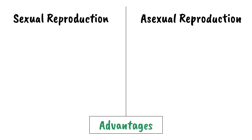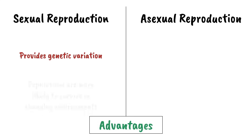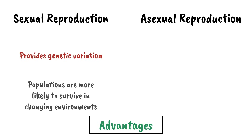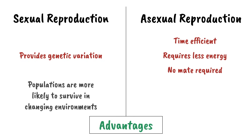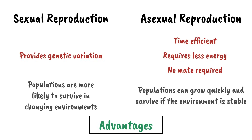Here, we're focusing on the advantages of each type of reproduction. Sexual reproduction has the advantage of providing genetic variation within a population, and so the populations are more likely to survive in changing environments. Asexual reproduction is more time efficient, it requires less energy, and doesn't rely on an individual being able to find a mate, meaning populations can grow quickly and survive if the environment is stable.